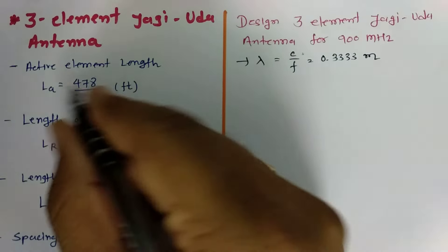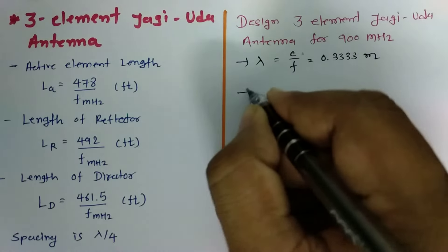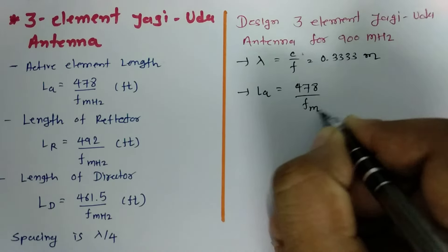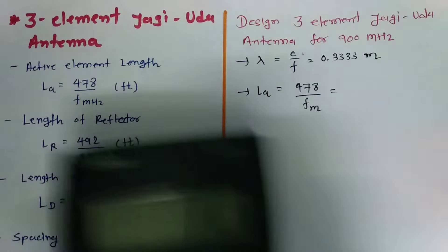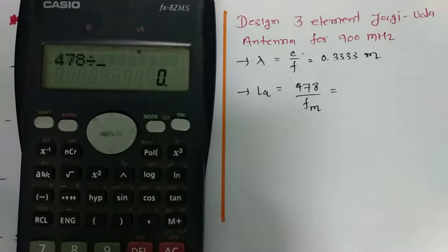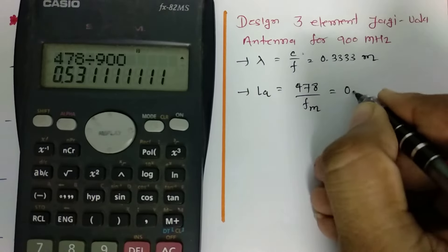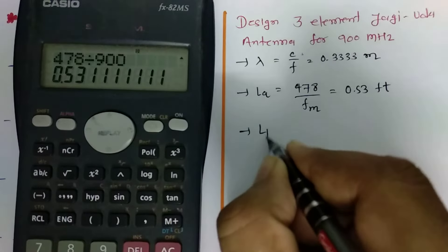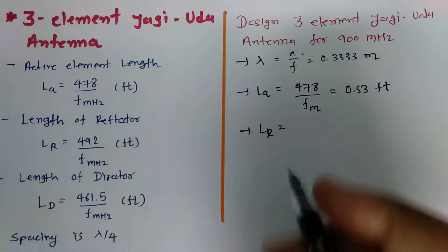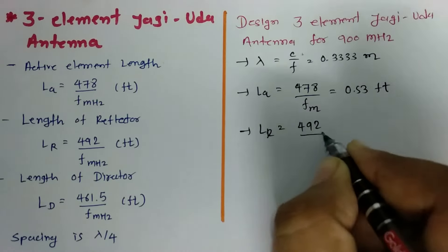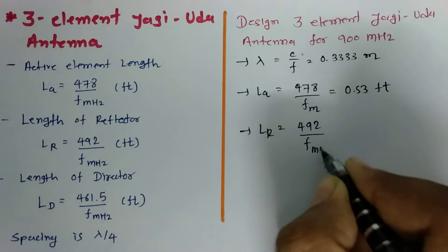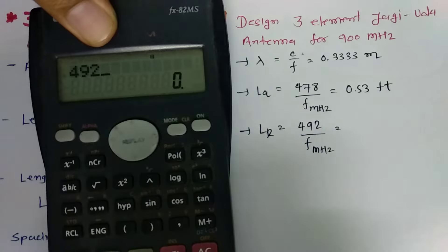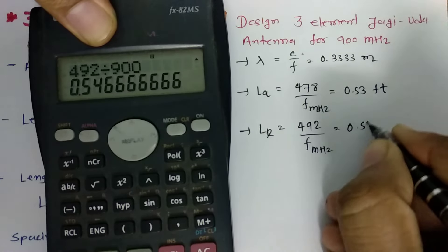First, we calculate the active element length, which is the driven element length: 478 divided by 900 MHz, giving 0.53 feet. Next, the reflector element length is 492 divided by 900 MHz, which gives 0.54 feet.